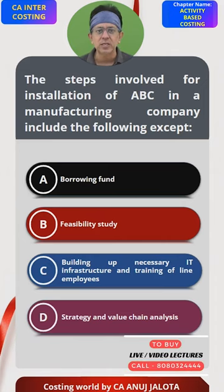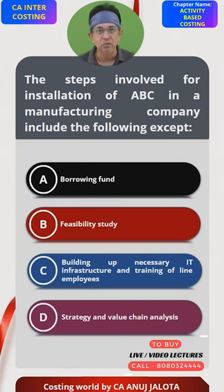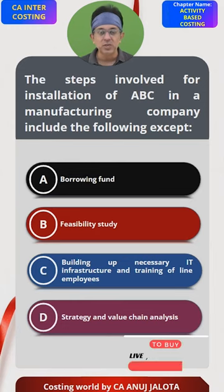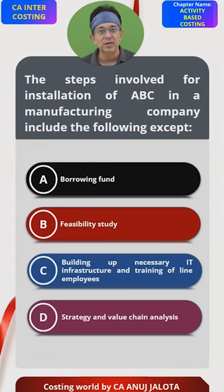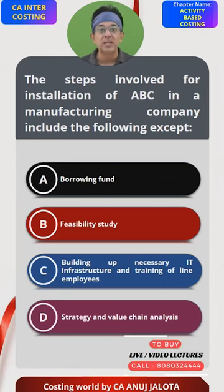D. Strategy and value chain analysis. Every company implements everything to attain a certain objective, and to attain that objective you follow a certain strategy. For example, through activity-based costing if you start to realize that your cost can be reduced, your strategy can be to reduce prices and try to capture more market share. Value chain analysis basically helps you find out which activity should be done and which should not be done.